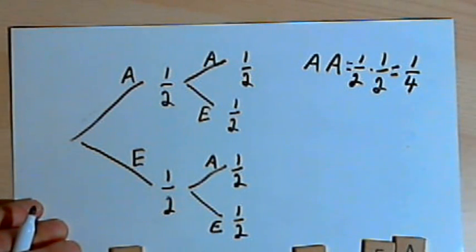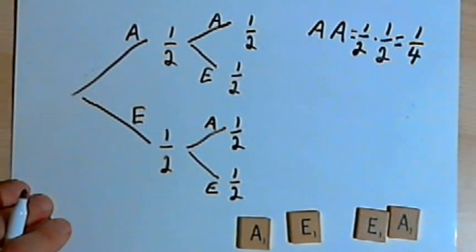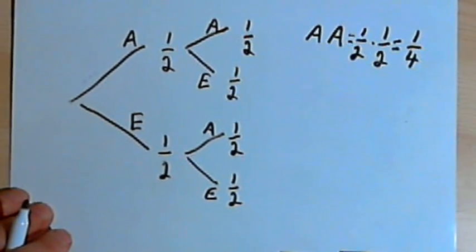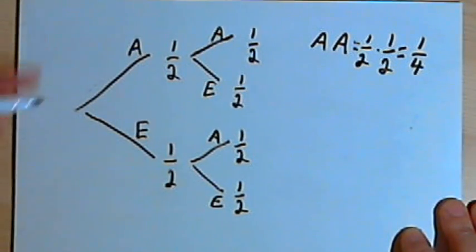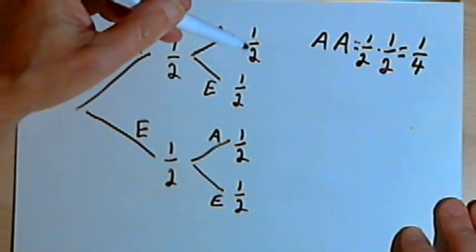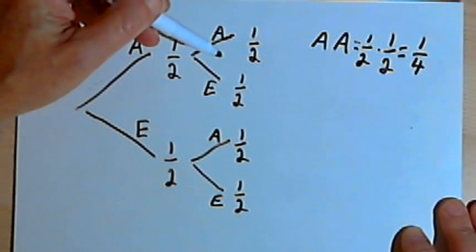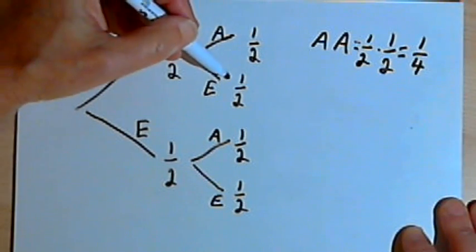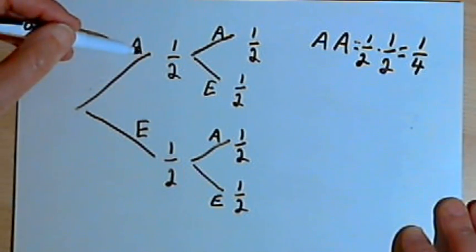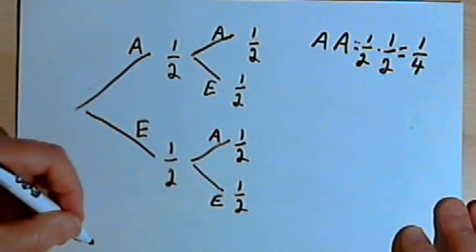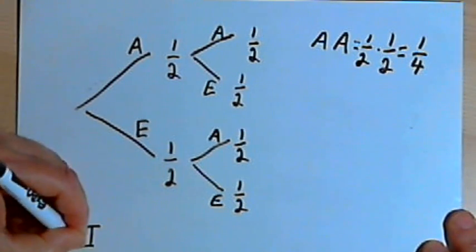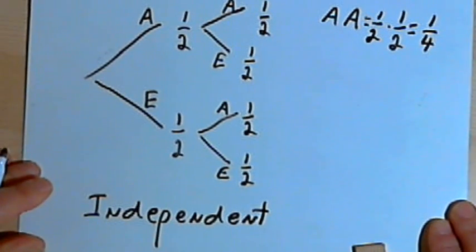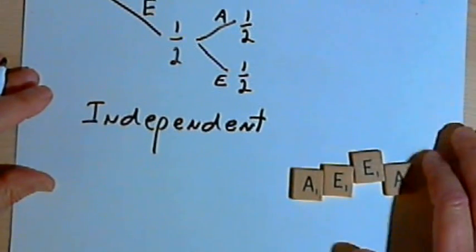When I did that, I replaced the piece that I took — whatever I took, I put it back in the bag. So we could call that probability with replacement. We could also talk about that as being two independent events, because the probabilities for the second time around did not depend on what I picked the first time around. The second time around, my probability of getting an A was one-half and my probability of getting an E was one-half, and that didn't depend on whether I got an A or an E the first time. So these are called independent events — the probability for the second event was independent of the probability for the first event.